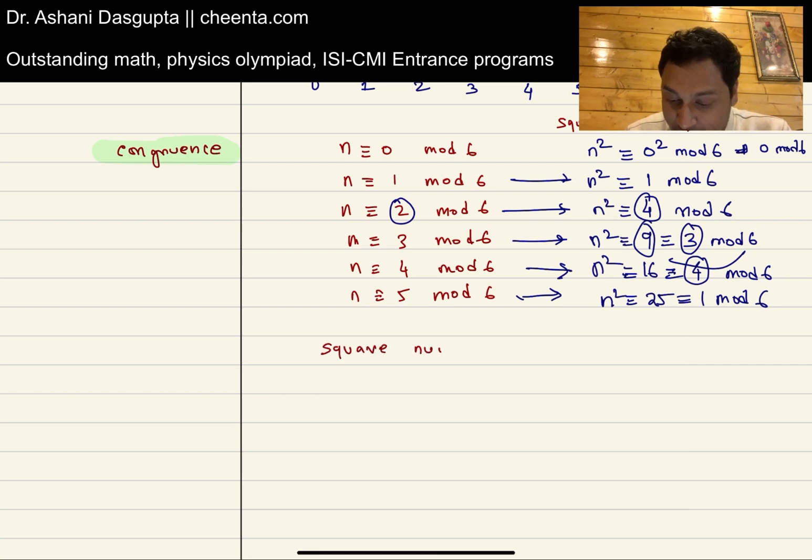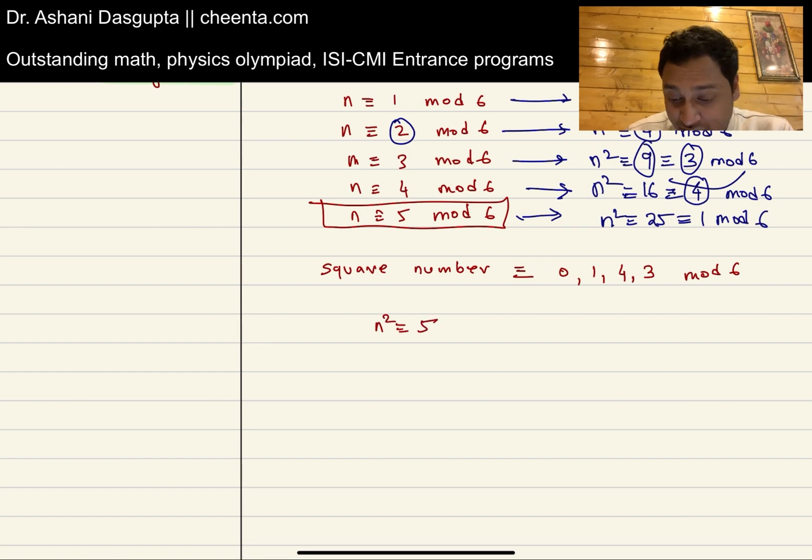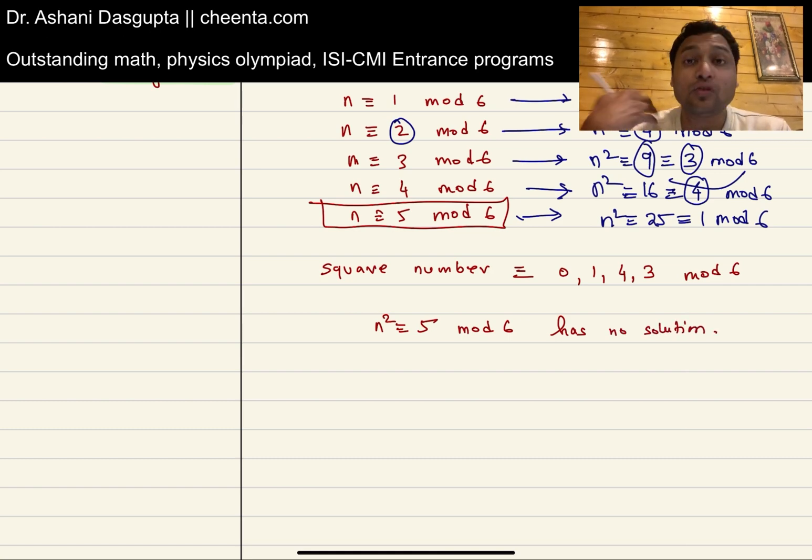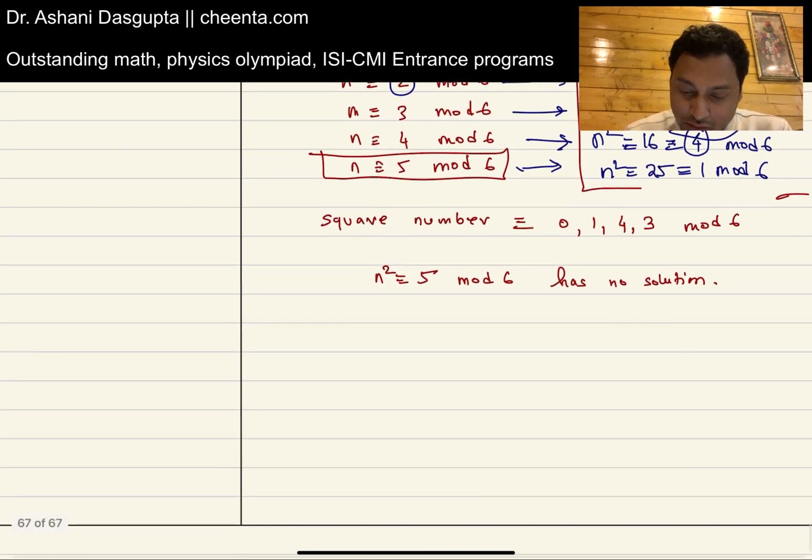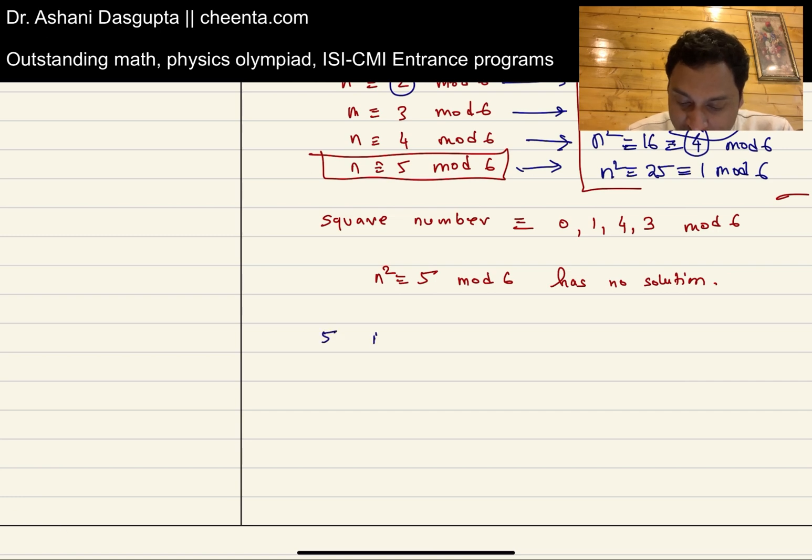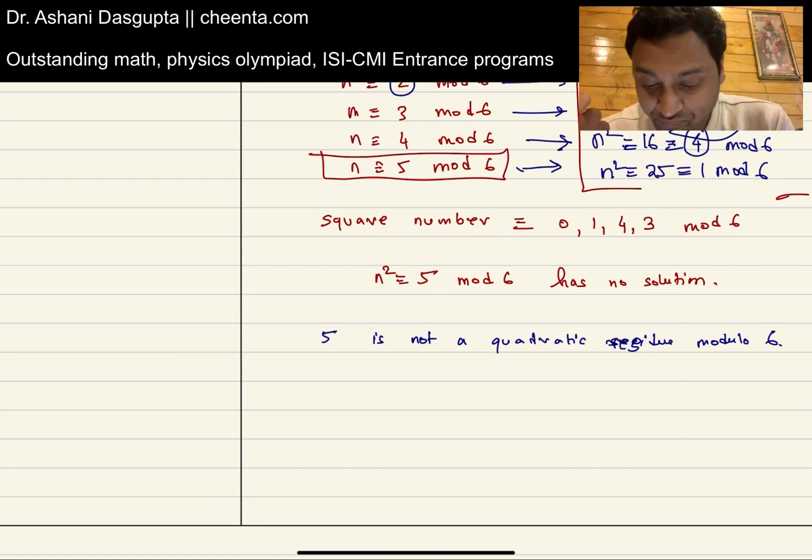So what we see is that a square number is congruent to 0, 1, 4, or 3 mod 6. So a square number can never be congruent to 5 mod 6. So n squared congruent to 5 mod 6 has no solution. Square of no number is congruent to 5 mod 6. That's what we found from our little experiment. So in other words, 5 is not a quadratic residue.